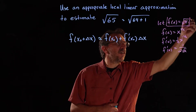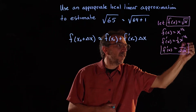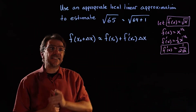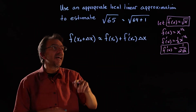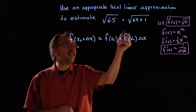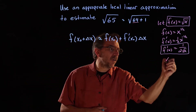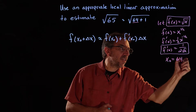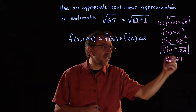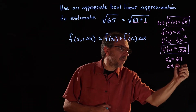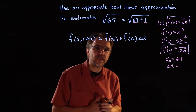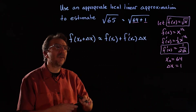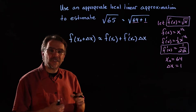We have our function and derivative. We also need x naught and delta x. The 64 is our known domain value, and 1 is our delta x — that's the little bit extra beyond 64 that gives us 65.